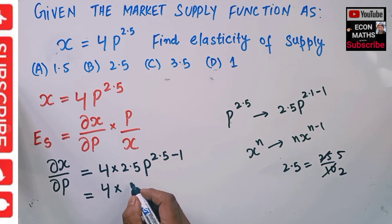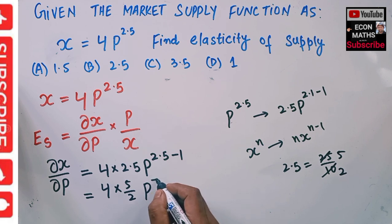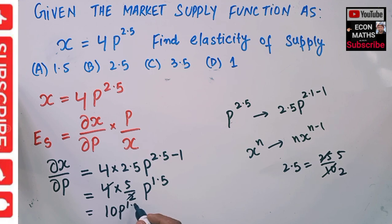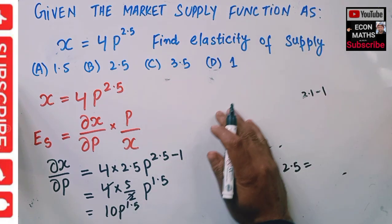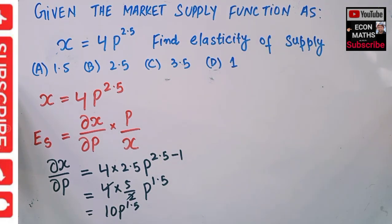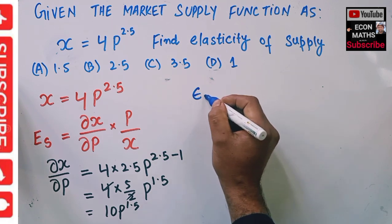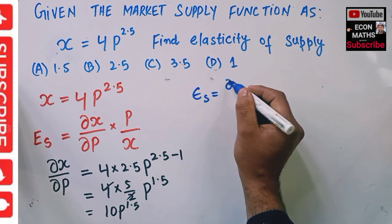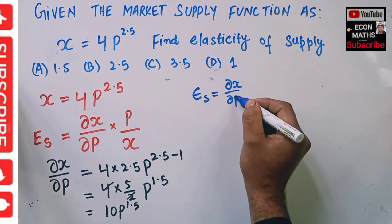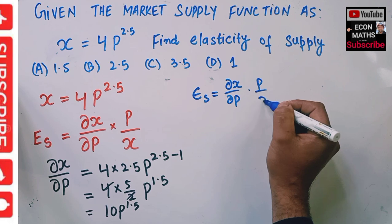So we get 10P^1.5. Now using the elasticity formula, elasticity of supply is equal to dX/dP times P/X.